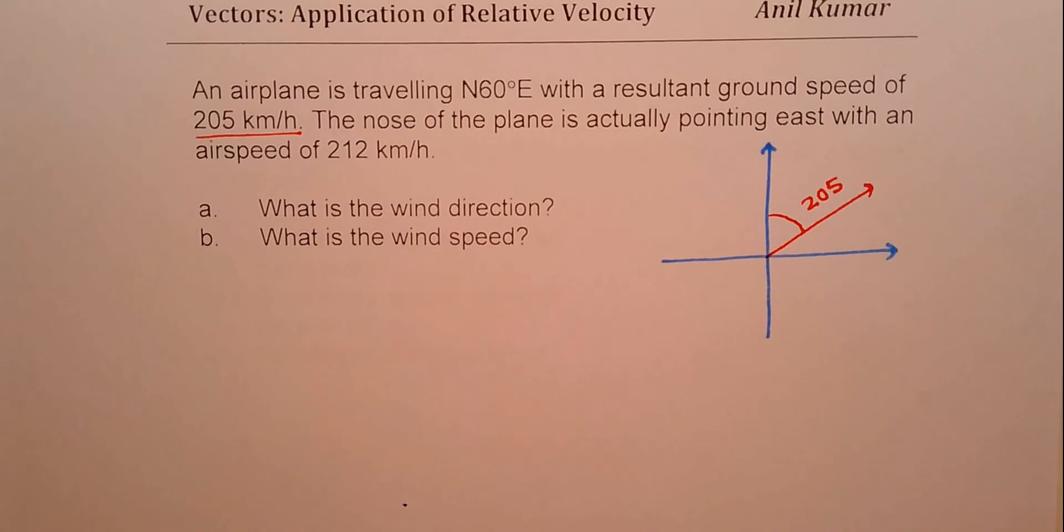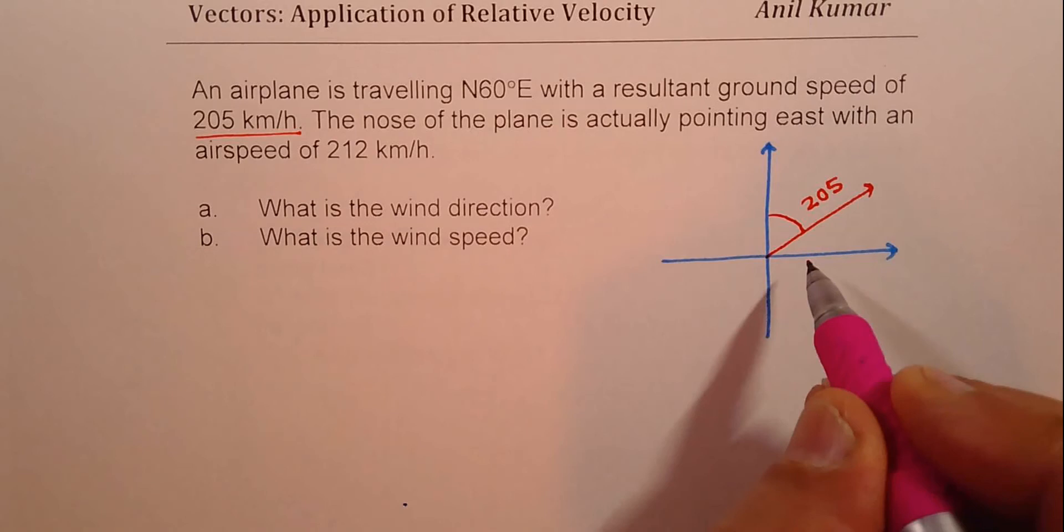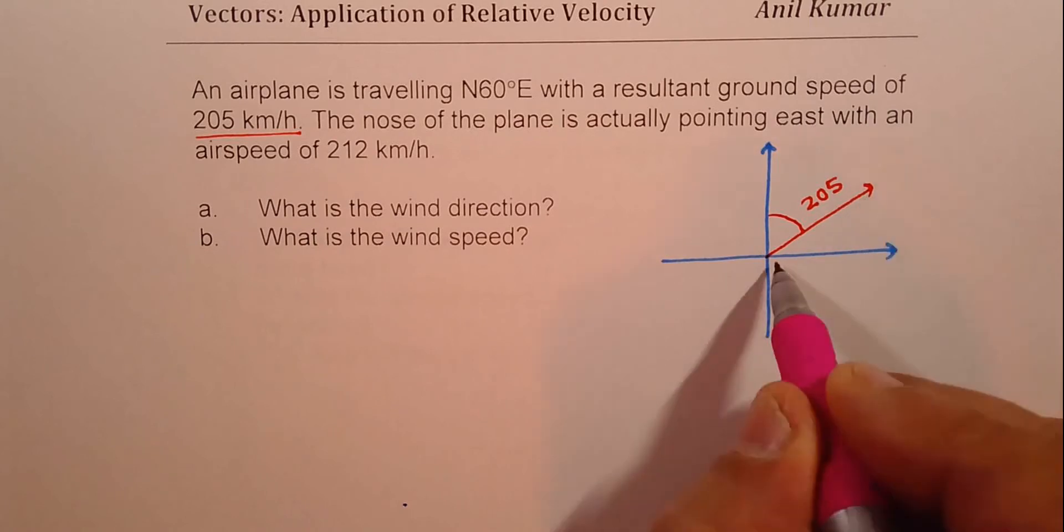Now, we are also given that the nose of the plane is actually pointing east with an airspeed of 212. So let us say 212 is slightly longer, kind of like this.